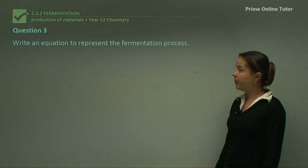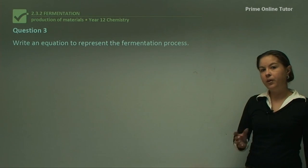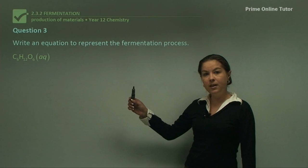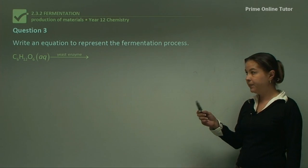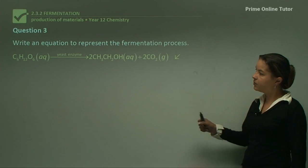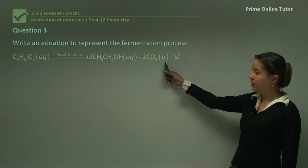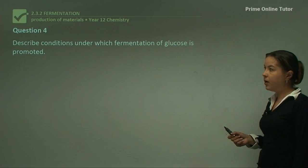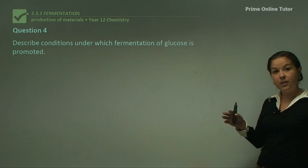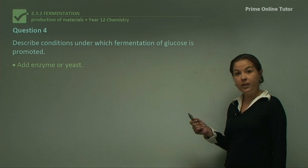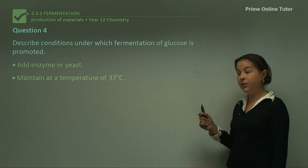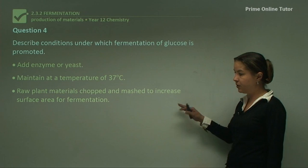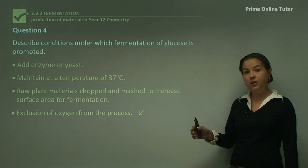Question three: write an equation to represent the fermentation process. Going from glucose to ethanol and carbon dioxide, we need to remember that C6H12O6 is glucose, we need a yeast enzyme in the equation, and we get two aqueous ethanol molecules and two gaseous carbon dioxide molecules. This equation is quite important to remember. Question four: describe conditions under which fermentation of glucose is promoted. We need an enzyme or yeast, maintain temperature at 37 degrees, chop and mash raw plant materials to increase surface area, and exclude oxygen — so it needs to be anaerobic.